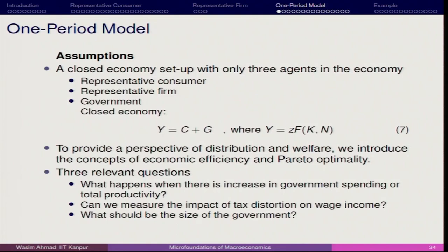Here we talk about distribution and welfare. The role of government is to ensure that whatever equilibrium is achieved with both the representative consumer and firm results in a competitive equilibrium that is also efficient. We will introduce concepts of welfare economics, distribution, and economic efficiency directly linked with Pareto optimality. We can measure the impact of tax distortion on wage income, what happens with increases in government spending or total factor productivity, and what should be the size of the government.